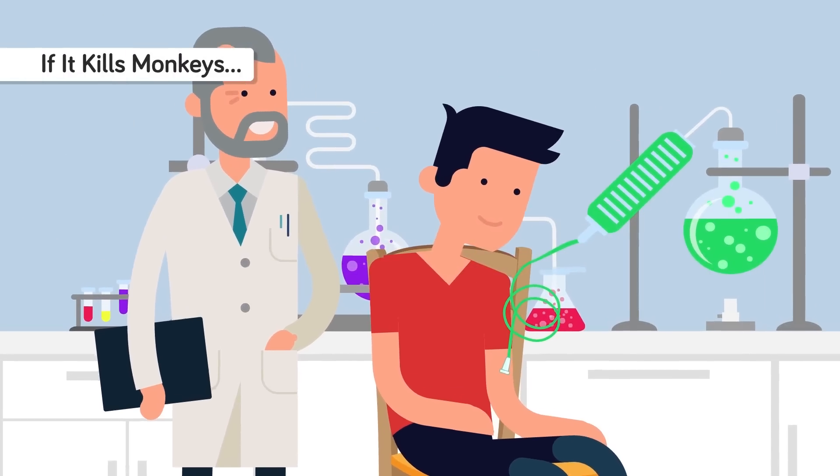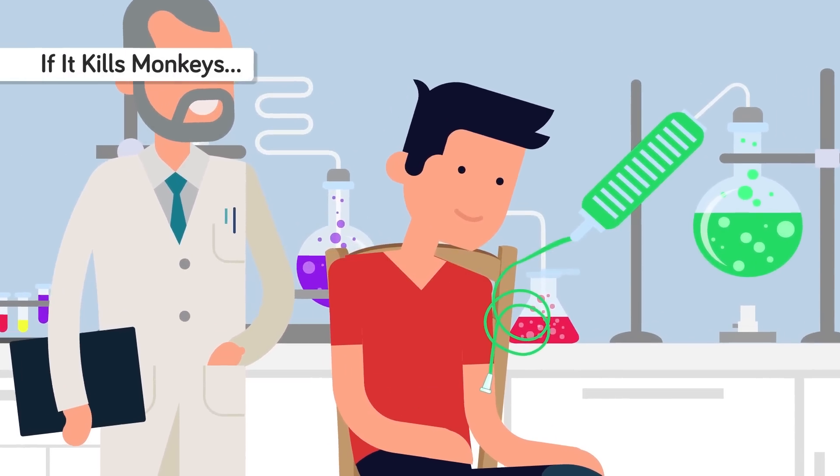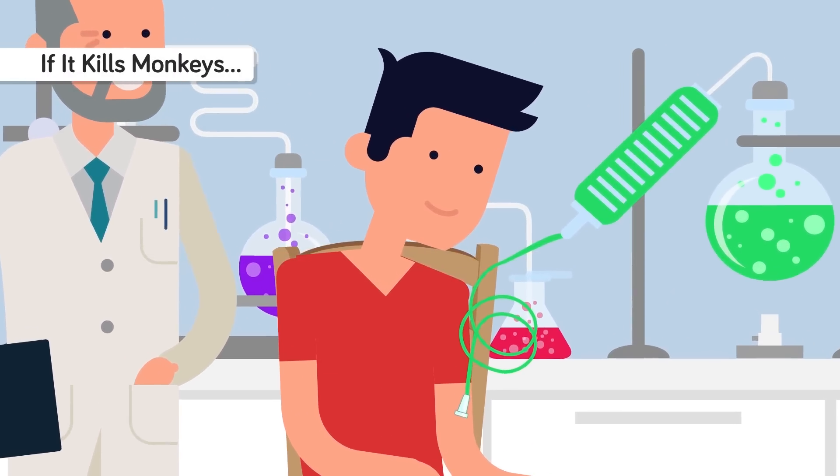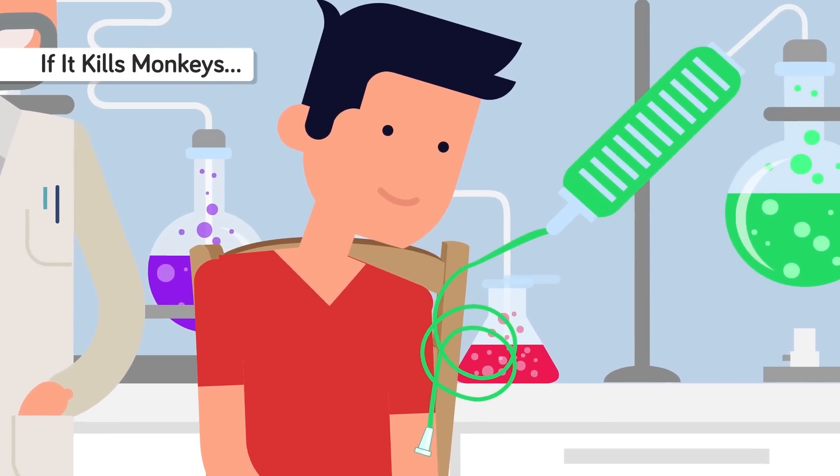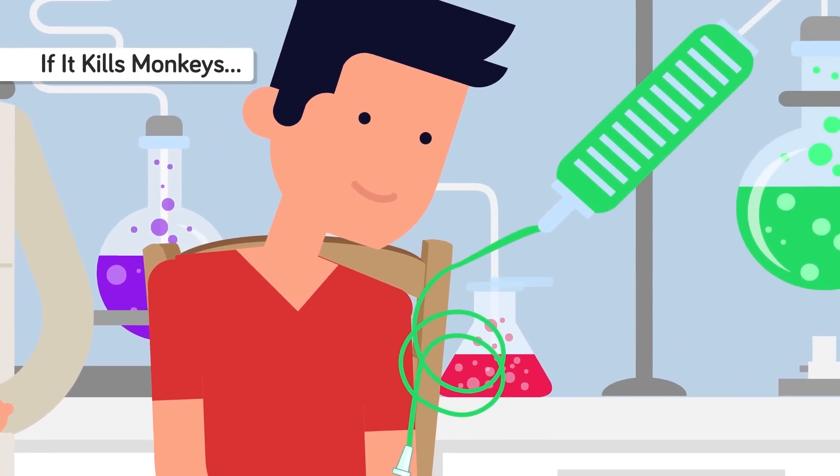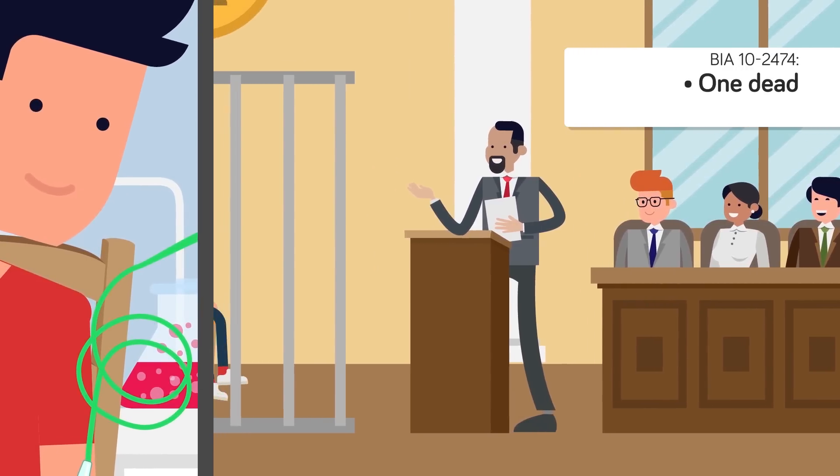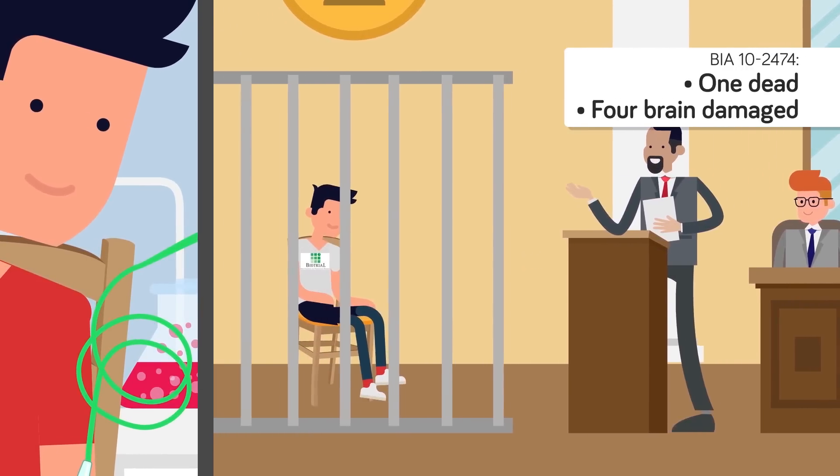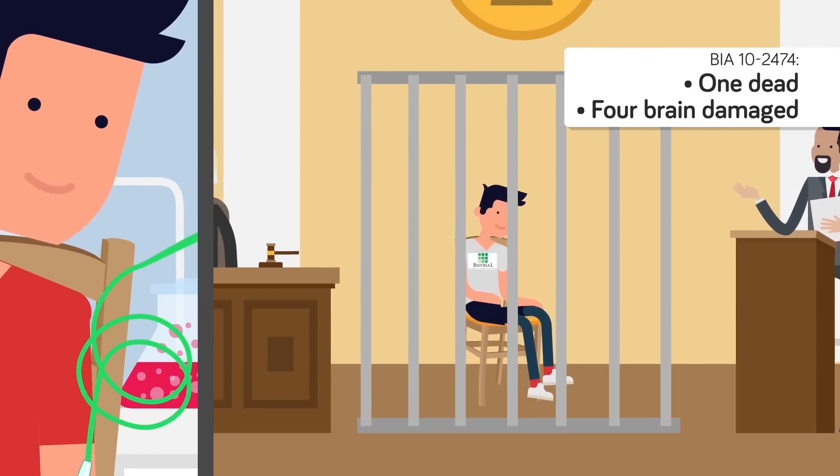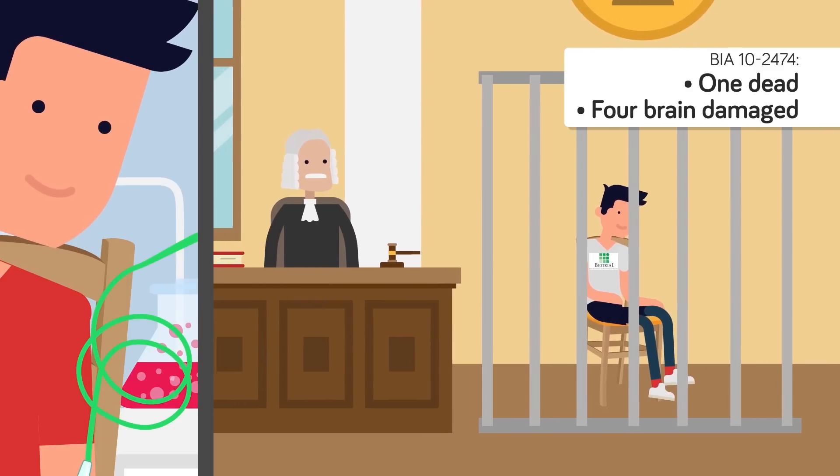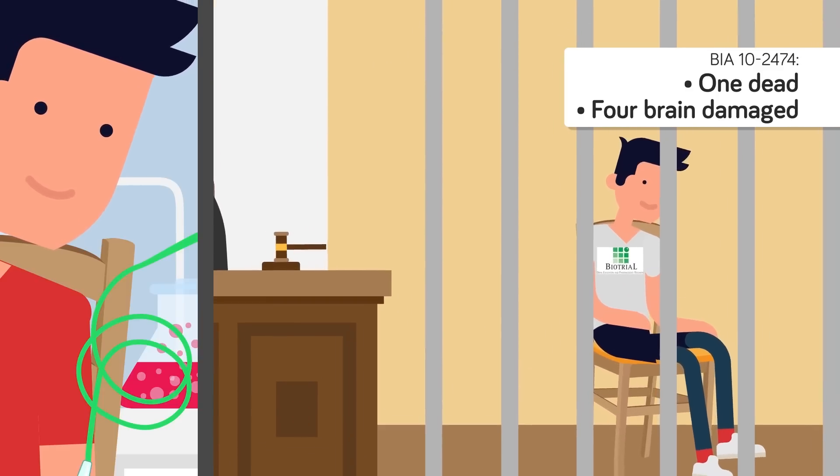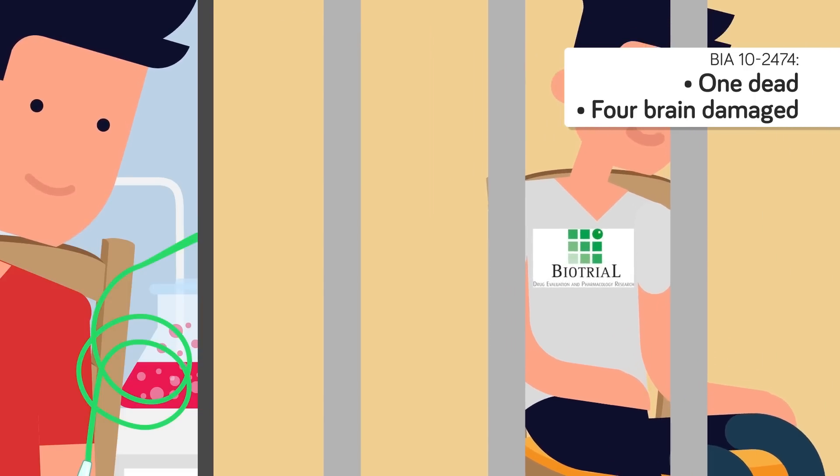This recent trial that went wrong took place in France in 2006. It was so bad that the European Union decided it was time to create new laws that protected volunteers. The trial was said to have been bungled, and it led to the death of one man and brain damage of four more. A company called Biotrial was testing a compound called BIA-102474 that was being tested to cure a number of diseases.